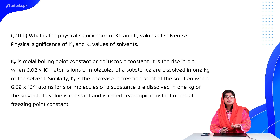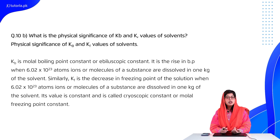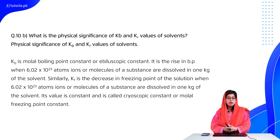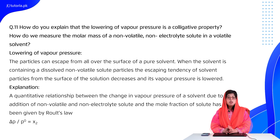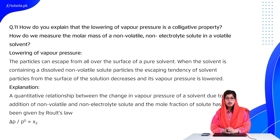If you don't know which compound you are dealing with, you can also calculate the molecular mass using these formulas. Moving forward, students, question number 11: how do you explain that the lowering of vapor pressure is a colligative property? How do we measure the molar mass of a non-volatile, non-electrolyte solute in a volatile solvent?